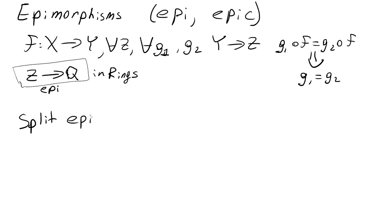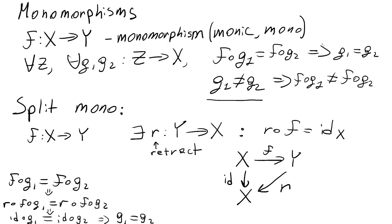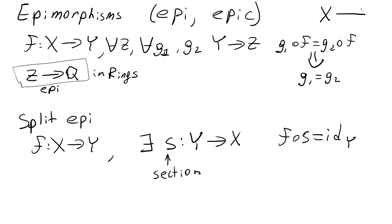Split epimorphisms are defined analogously. F from X to Y is a split epi if there exists a morphism S going in the opposite direction, called a section, such that F∘S = id_Y — so S is a right inverse for F. In commutative diagrams, monomorphisms are denoted by an arrow with a hook, and epimorphisms are denoted by an arrow with a double tip.